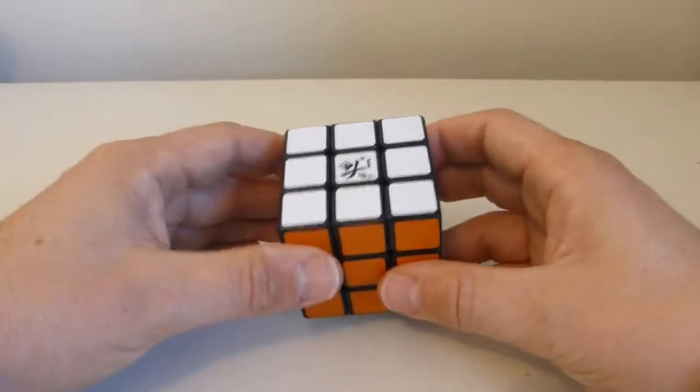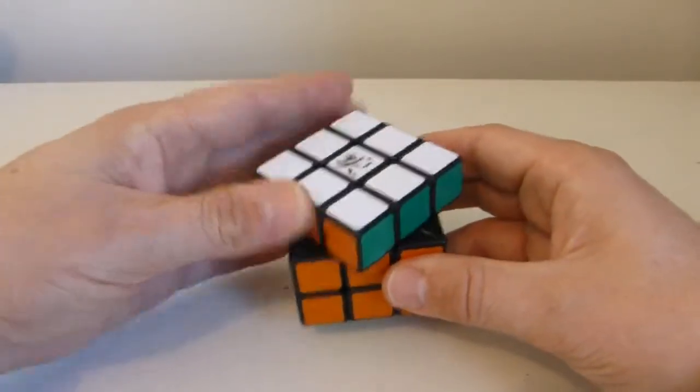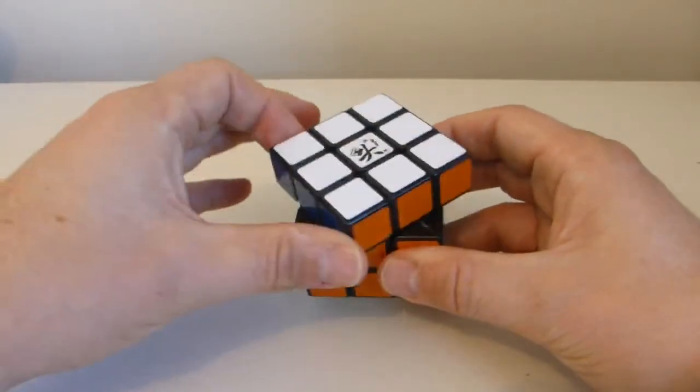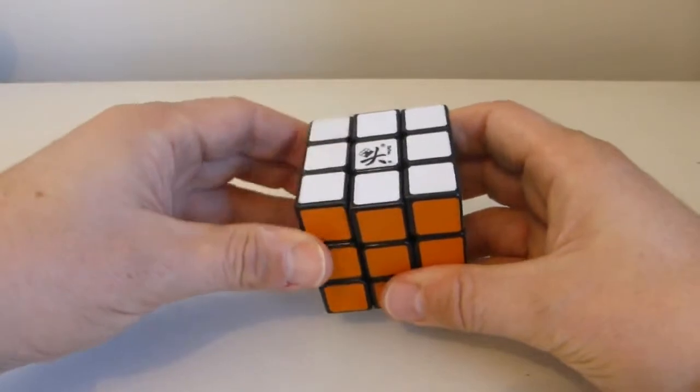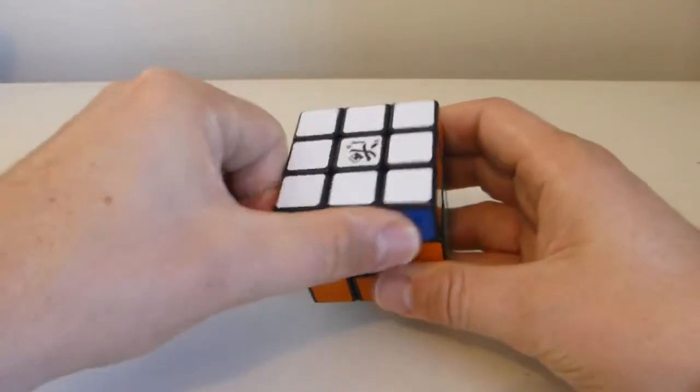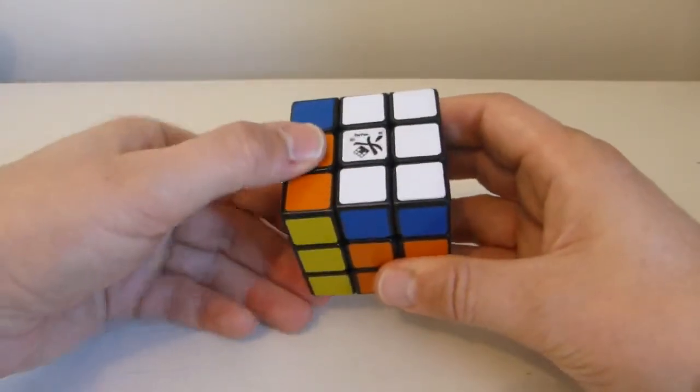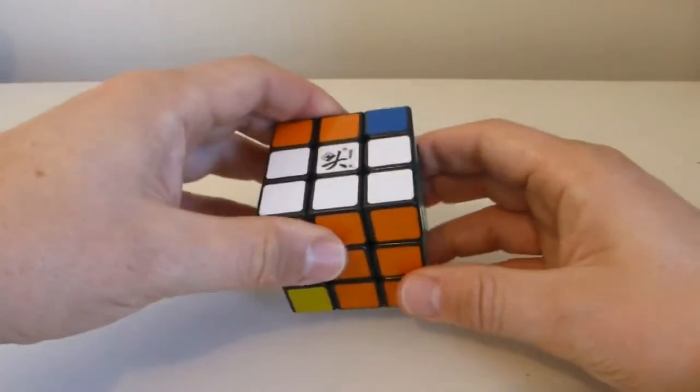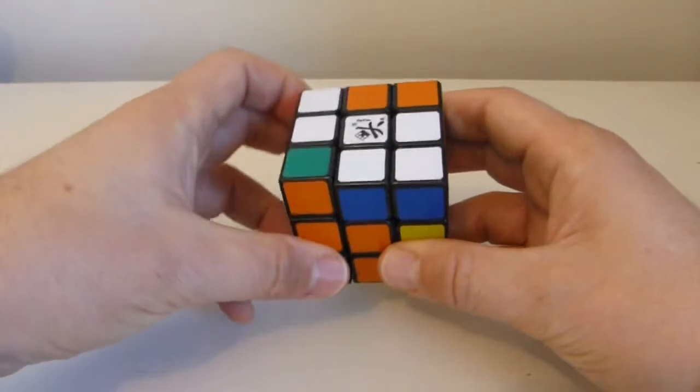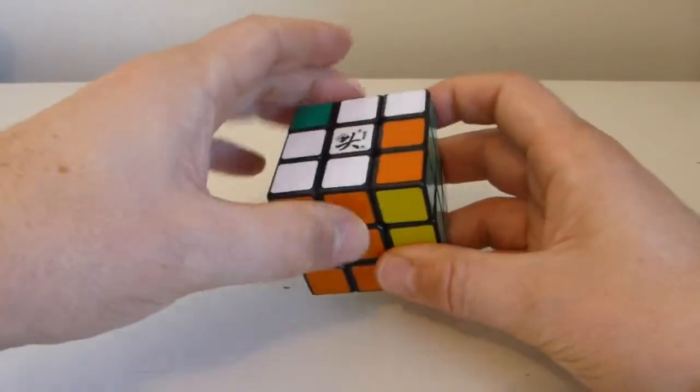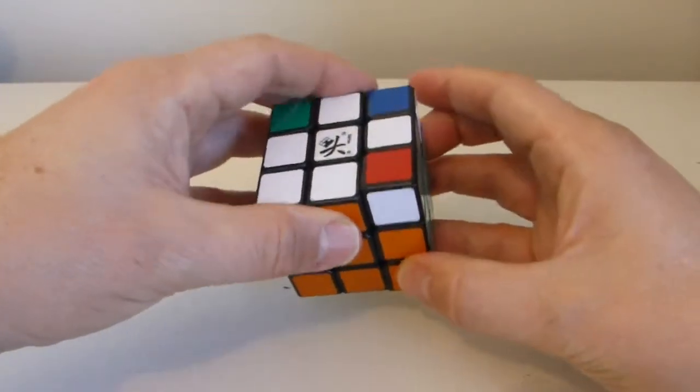Now of course the mirror of the corner piece series is, instead of turning an up turn to begin with we turn an up prime. And instead of turning the right face after that, we turn the left face. So the mirror would be up prime, left prime, up prime, right, up prime, left, up, right prime.